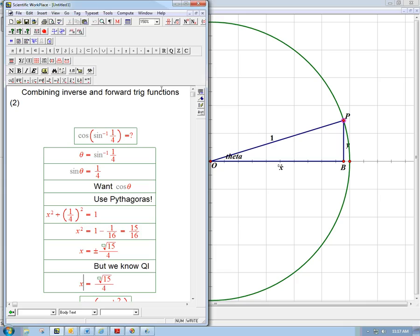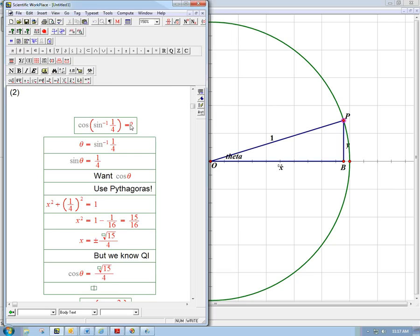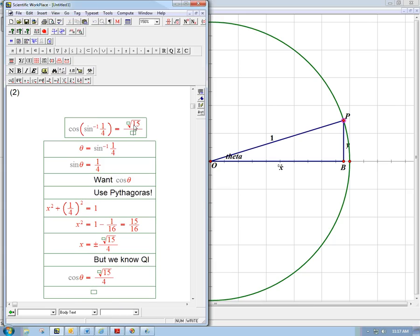And so x is really just plus root 15 over 4. And that's cosine theta. We could have said cosine theta the whole time, x was just easier to write. So cosine theta is going to be root 15 over 4. And so that means that this guy, the answer to this guy, is root 15 over 4.